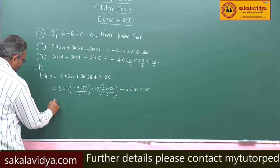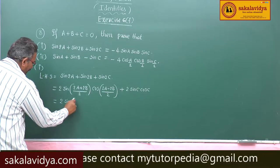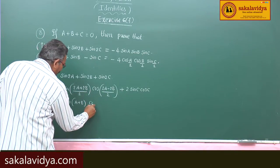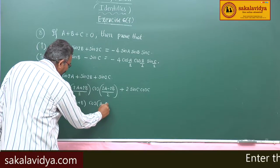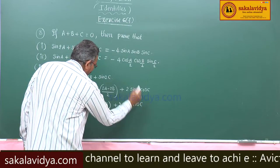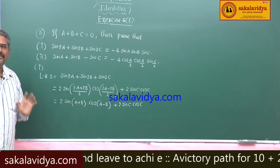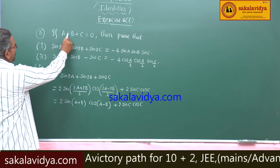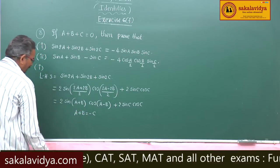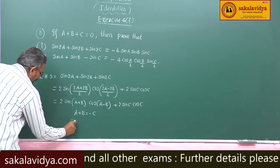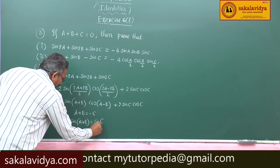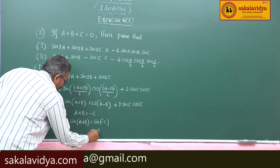This can be written as 2 sin(A+B) cos(A-B) plus 2 sin C cos C. Now, since A plus B plus C equals 0, we have A plus B equal to minus C. Applying this: sine of A plus B equals sine of minus C, which is minus sine C.